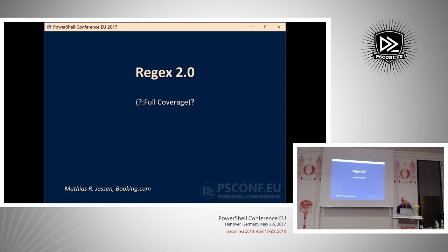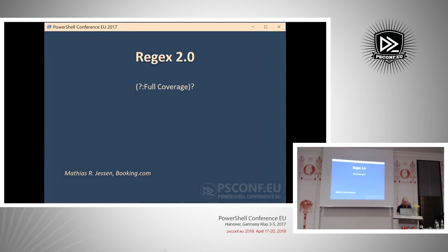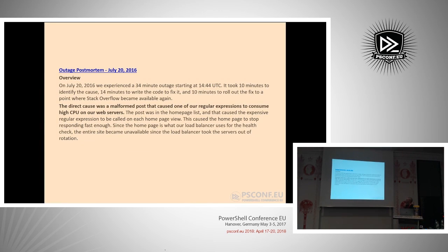One day in July last year I came home and was about to do some StackOverflow scavenging — finding interesting PowerShell questions — and StackOverflow was down. This happens once in a while, but it was down for about half an hour. At the end of the day the Stack Exchange Network status page posted a post-mortem: on July 20th they experienced a 34-minute outage. It took 10 minutes to identify the cause, 14 minutes to write the fix, and another 10 minutes to roll it out. The direct cause was a malformed post that caused one of their regular expressions to consume high CPU on their web servers.